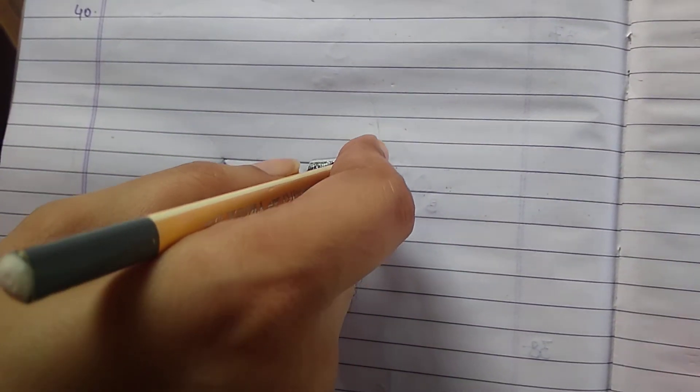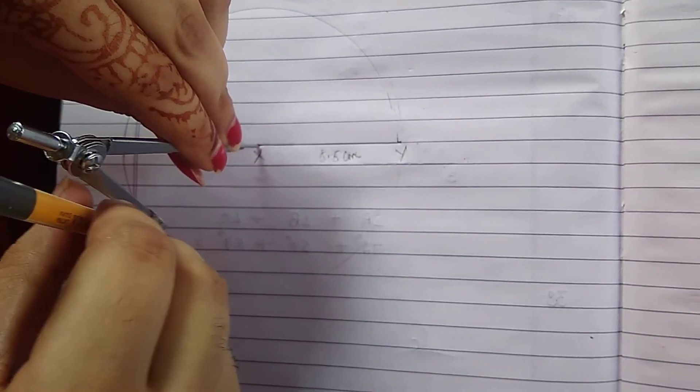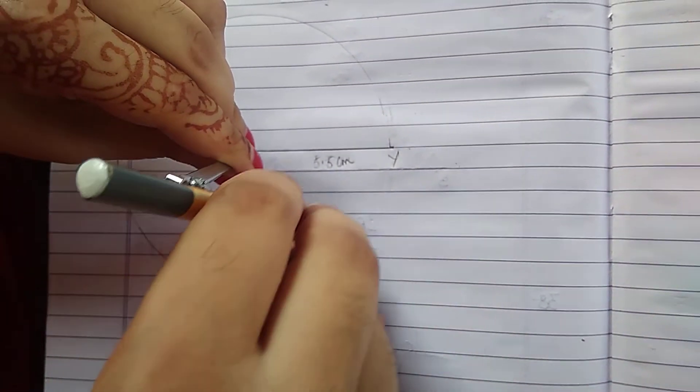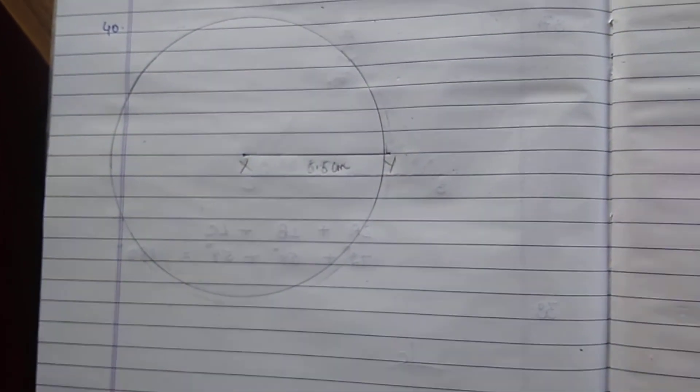Now we will keep the pointer of the compass at point X. Now we will rotate our pencil, like this. This is the required circle.